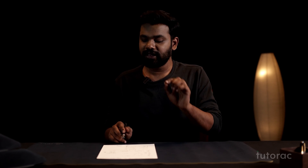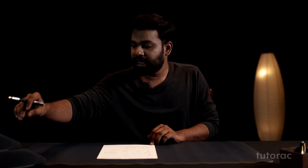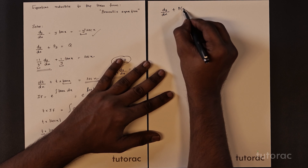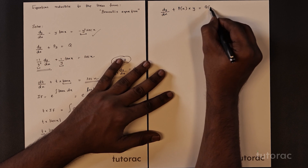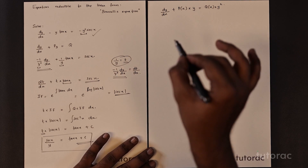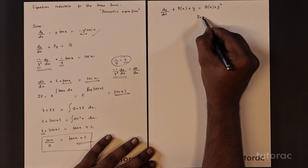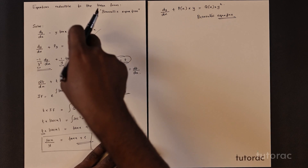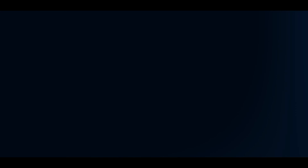We have now got the solution for the given differential equation. It was not directly in linear differential form, but we converted it into one. These kinds of equations are called Bernoulli's equations. More generally, a Bernoulli's equation is written as dy/dx + P(x)·y = Q(x)·yⁿ, and such equations are solved in the manner we have just discussed.